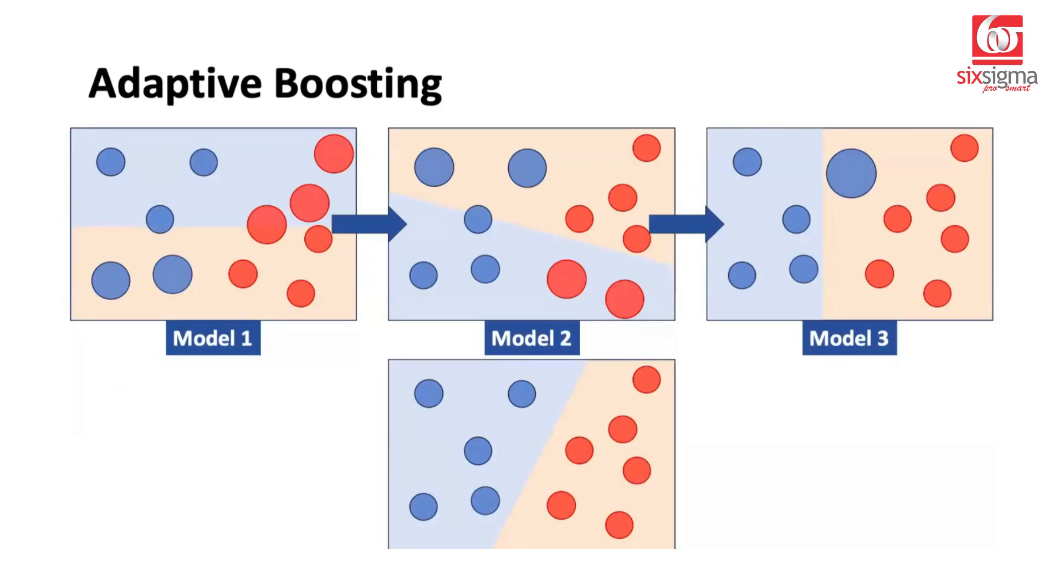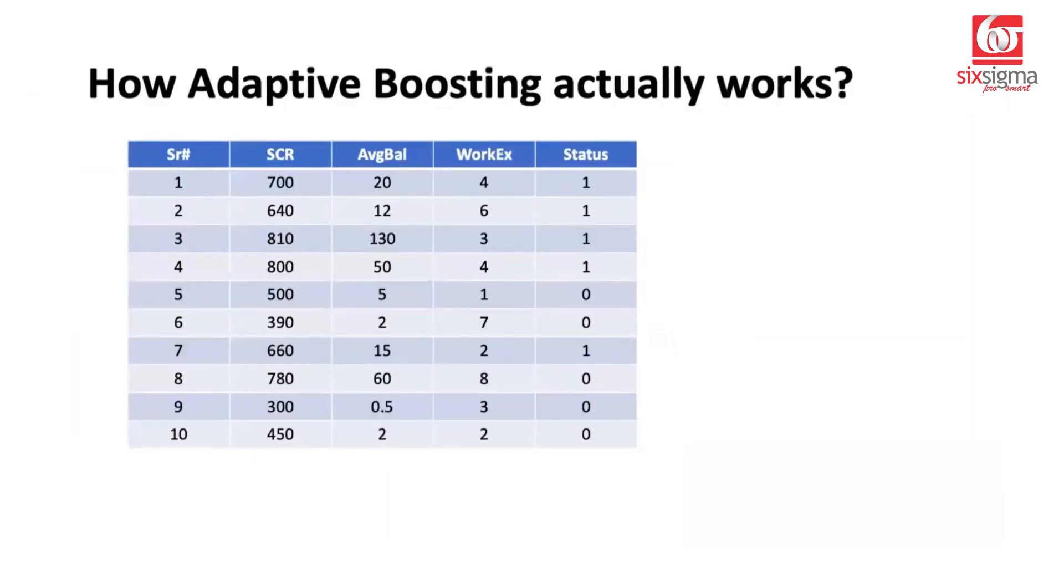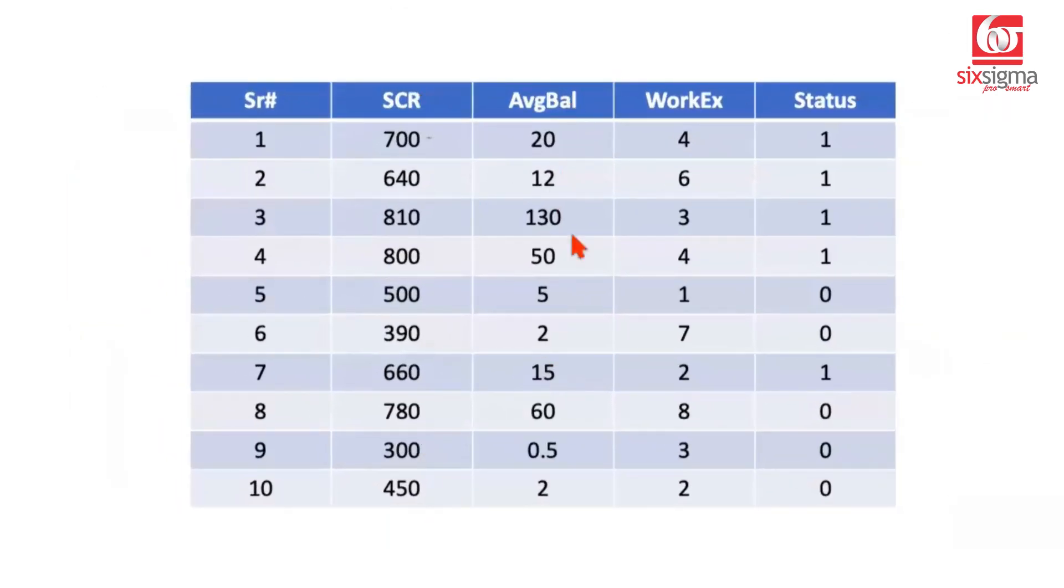I hope you understood how this works visually, but now let's understand how does it actually apply on the data. For that we'll have to take a small data set. Let's say we have some data related to credit risk. So we have features like credit score, the average account balance in thousands of dollars, the work experience in years,